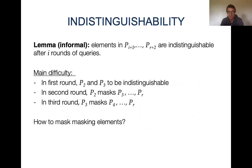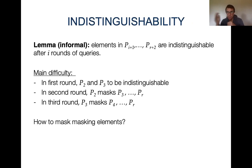The main lemma in this case is that we have indistinguishability: elements in P_{i+1} through P_{R+2} are indistinguishable after i rounds of queries. The main difficulty in the construction is as follows: after one round, we want elements in P2 and P3 to be indistinguishable. But in the second round, where the algorithm may have already learned P1, we want elements from P3 through P_R to be indistinguishable — so P2 must play the role of masking differences between elements in P3 through P_R.